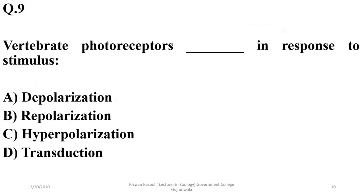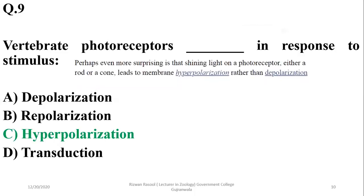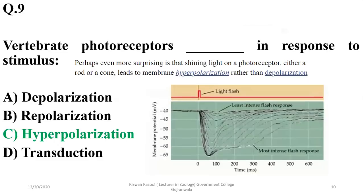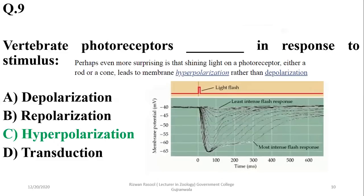Question 9: Vertebrate photoreceptors cause hyperpolarization in response to stimulus. Generally receptors cause depolarization, but vertebrate photoreceptors cause hyperpolarization. In the case of invertebrate photoreceptors, they are responsible for depolarization. So C is the right option.